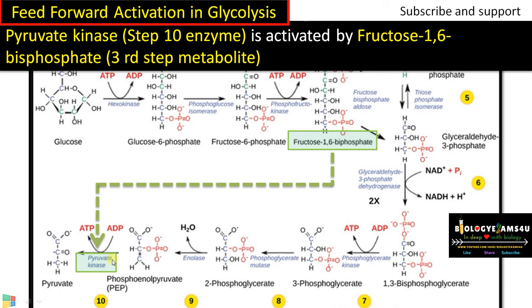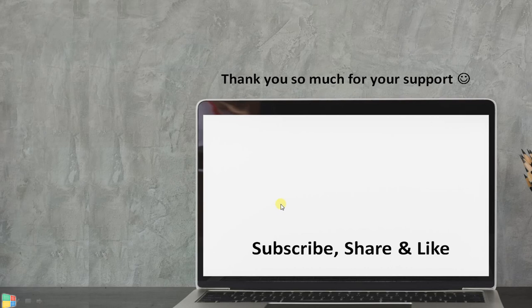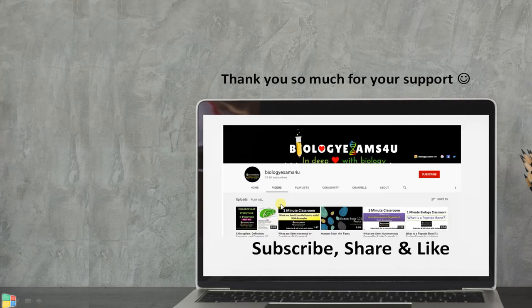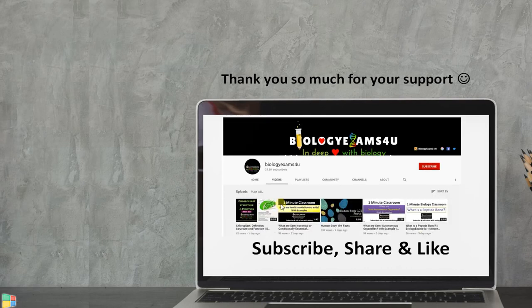Fructose-1,6-bisphosphate activates pyruvate kinase to form the final product pyruvate. This type of activation is called feed-forward activation. Hope you understand the concept — thank you so much for your support. You're with biologyexams4u.com.